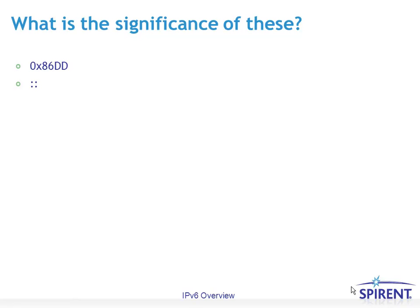Colon colon implies an all-zeros address in the IPv6 addressing scheme — more about that and the format of many other addresses in the IPv6 addressing topic. Colon colon 1 is actually all zeros ending in 1, which is the IPv6 loopback address, similar to how 127.0.0.1 is the IPv4 loopback address.